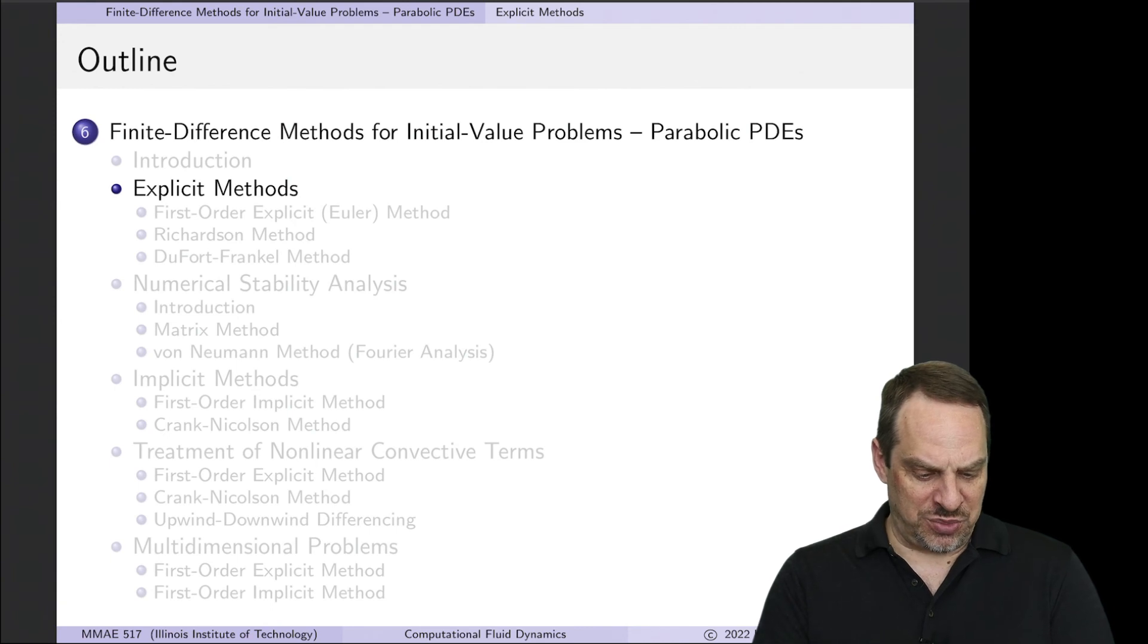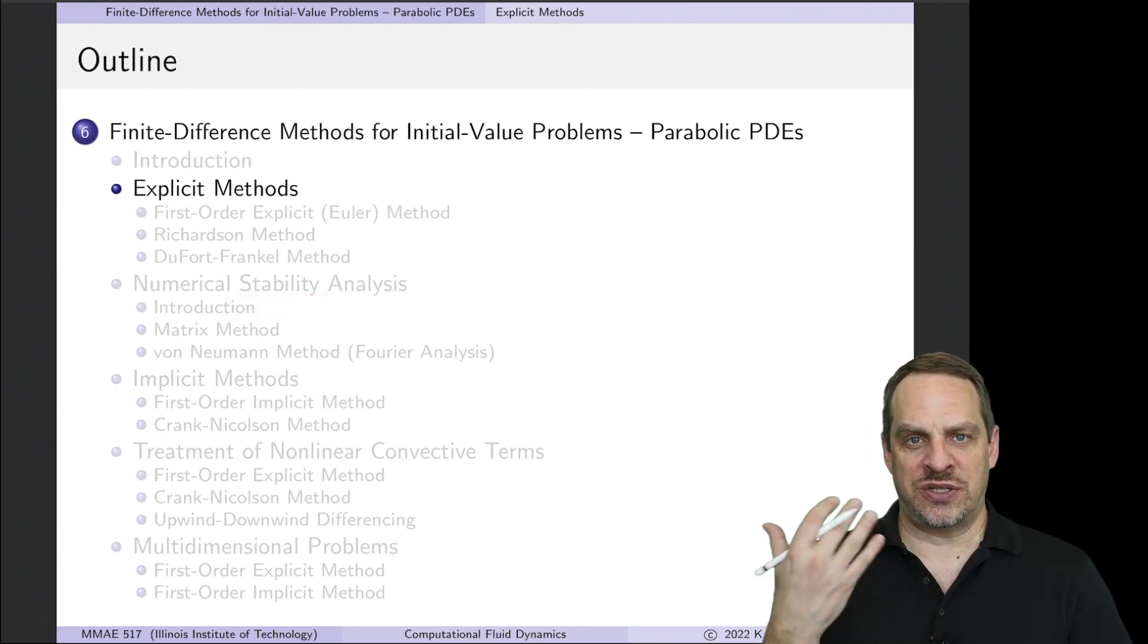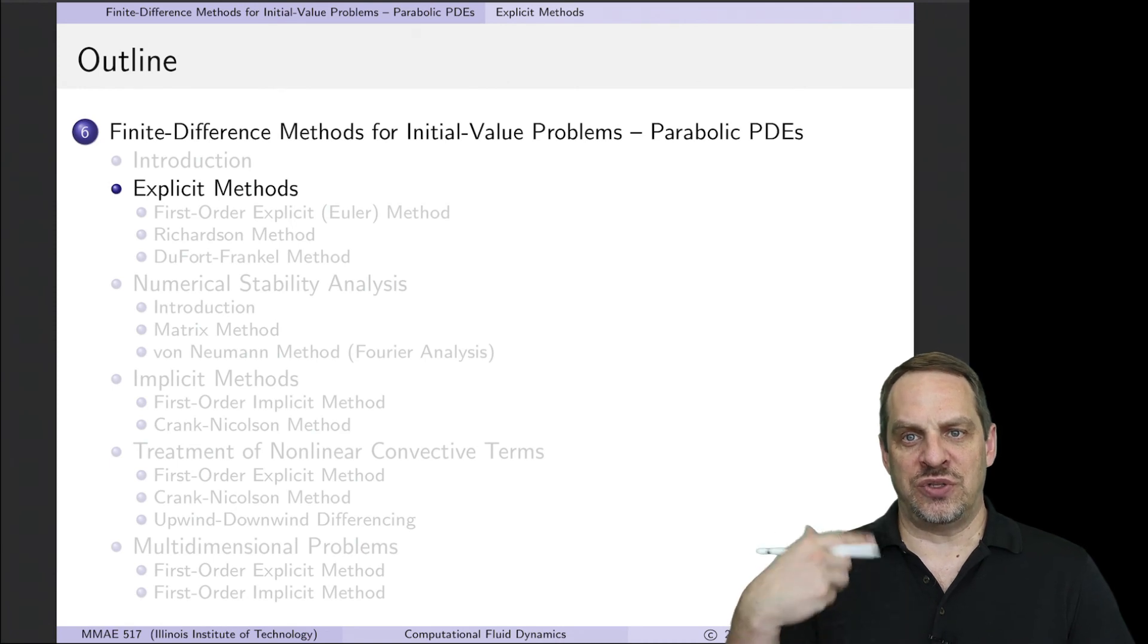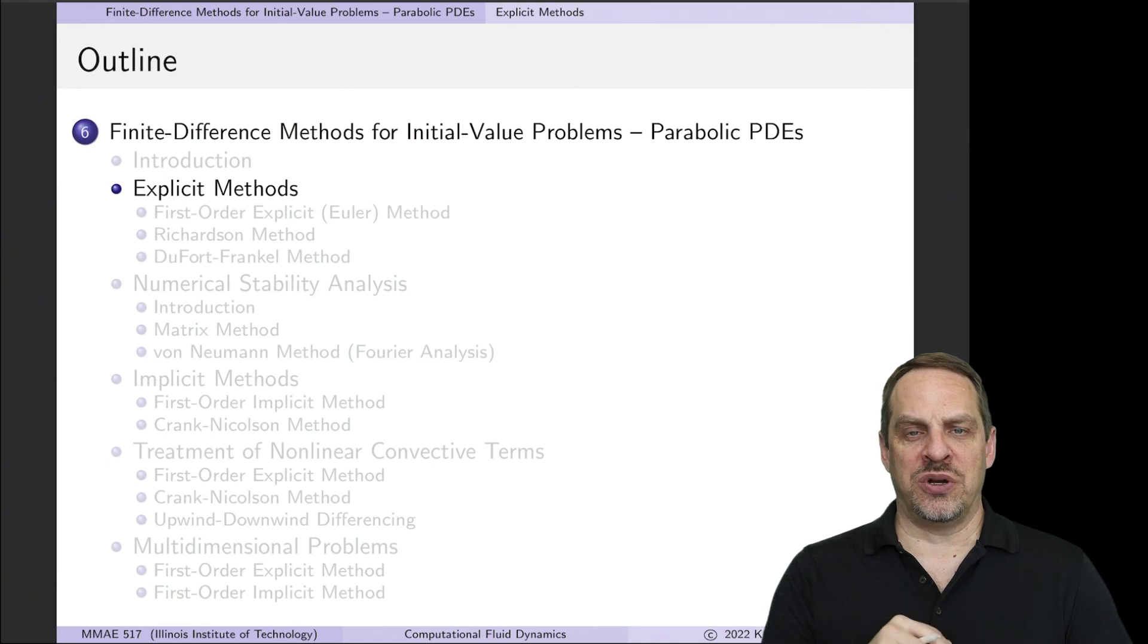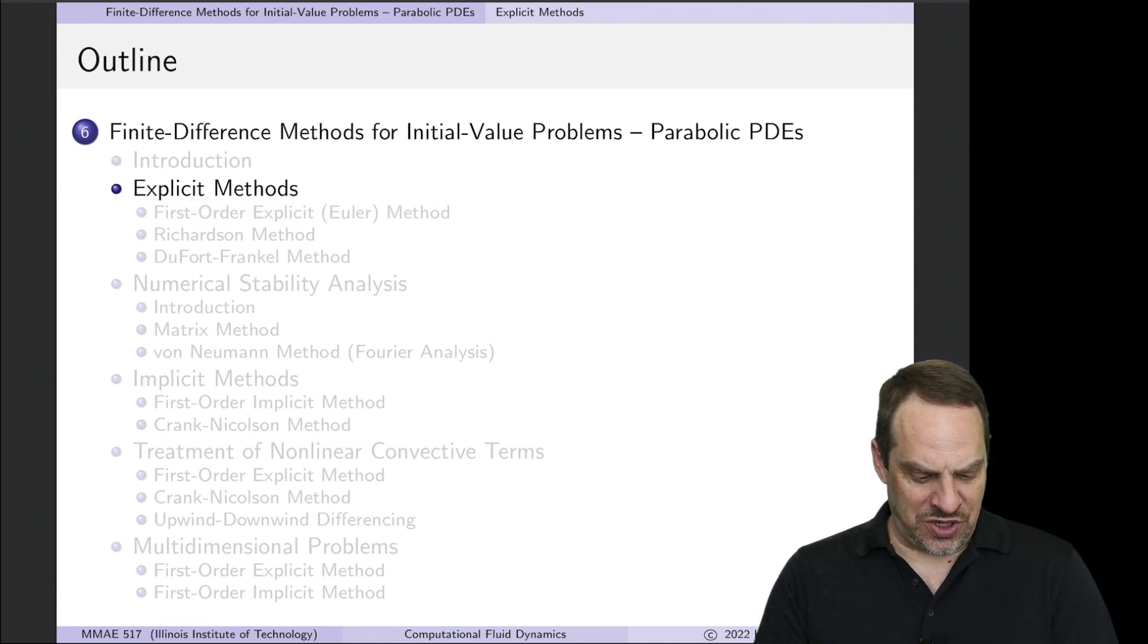In particular, we're going to have to look at stability. This is a new property that we did not have to worry about in the context of elliptic equations, because it was an iterative technique, so we had to worry about iterative convergence. Now we're going to have to worry about numerical stability. We'll talk about that after we discuss explicit methods in the next video.